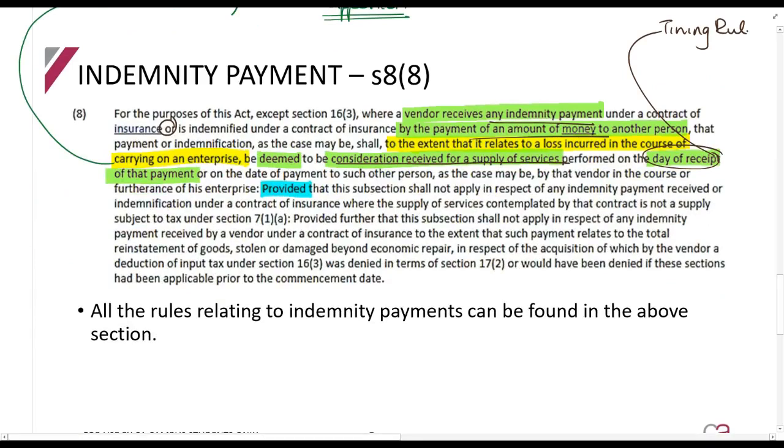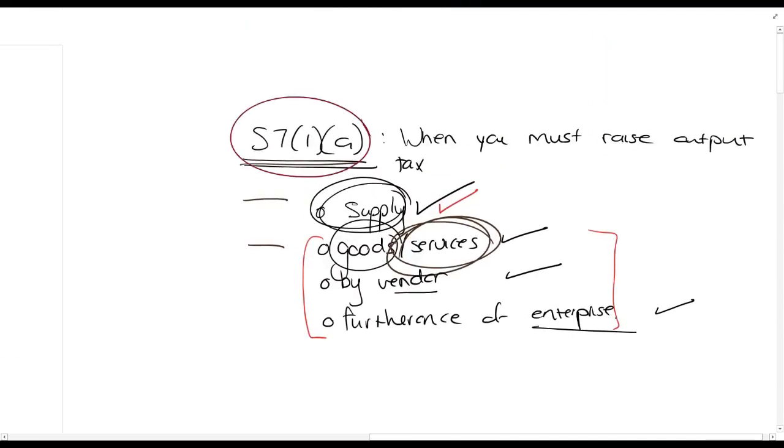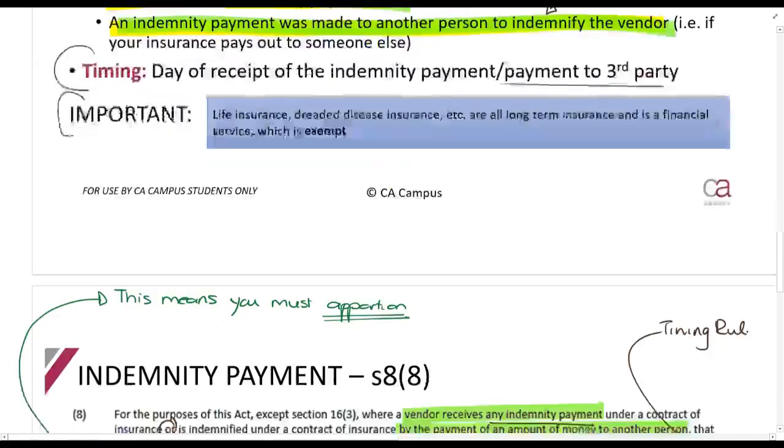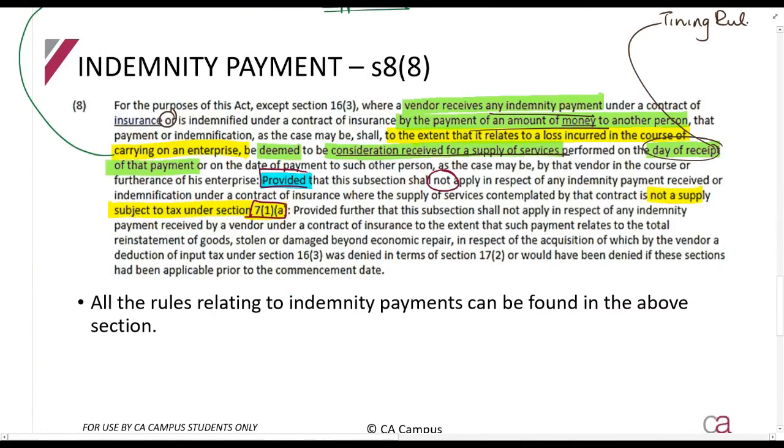Then, provided - I always just make this little half bracket around provided. For example, they say if it's not subject to tax under 7.1A, what section is section 7.1A? It's again this section, section 7.1A, when you must raise output tax. So they say if there's no output tax in terms of that section. For example, if it's an exempt supply. So I have a residential accommodation and that burns down and the insurance pays me out. It's exempt, so there's no output tax here.